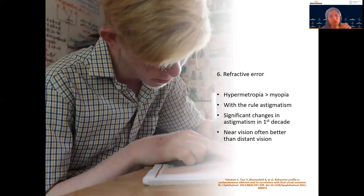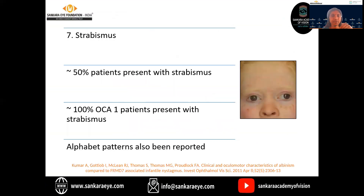Refractive errors are very common in these children. Hyperopia is more pronounced than myopia as per various studies, and with-the-rule astigmatism is very common. Significant changes in astigmatism are detected in the first decade of life. The near vision is often better than the distant vision. Strabismus is present in about 50% of the patients with albinism, and nearly 100% of OCA type 1 patients present with strabismus. Alphabet patterns are also commonly reported.